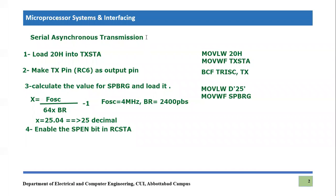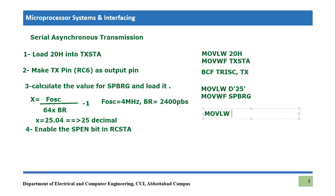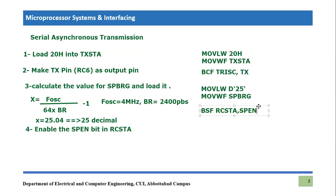The next step is to enable the serial port enable bit, which is present in the RCSTA (Receiver Status and Control register). Even though we are transmitting right now, we still have to enable this bit because it enables the serial port communication overall. To do this, write BSF (Bit Set File) RCSTA, SPEN. This is the fourth step.